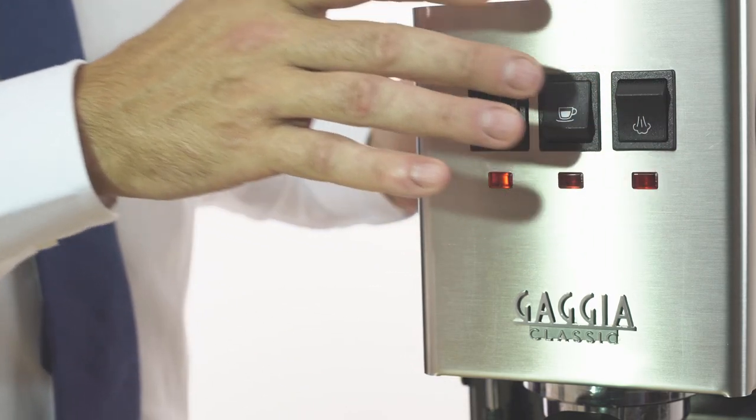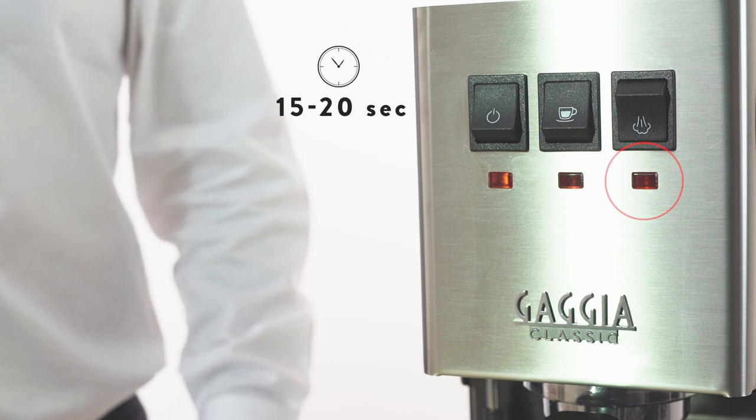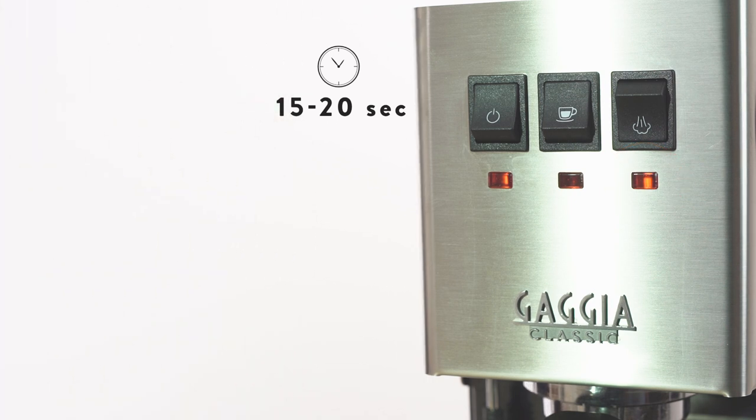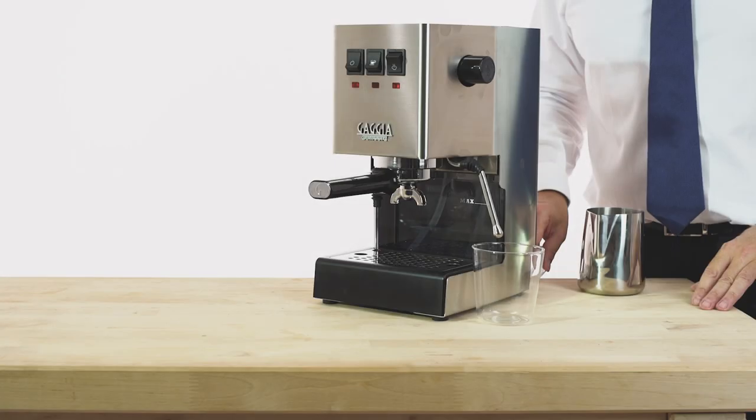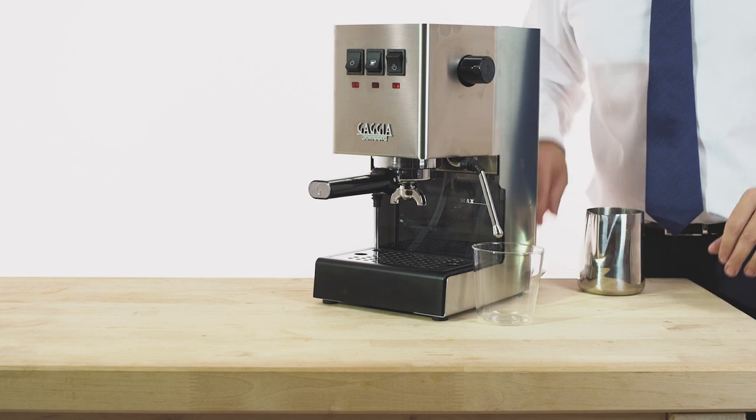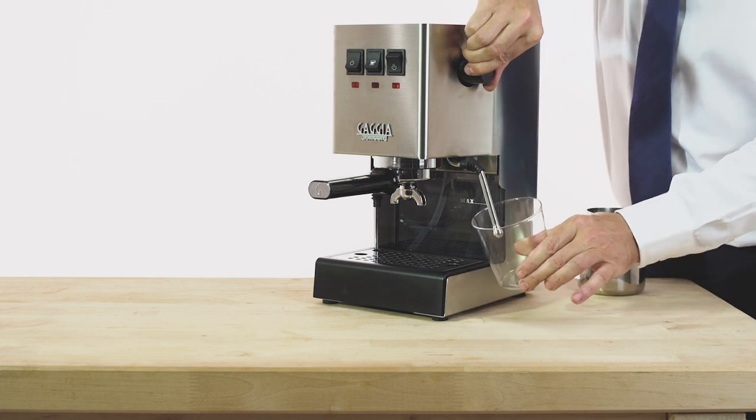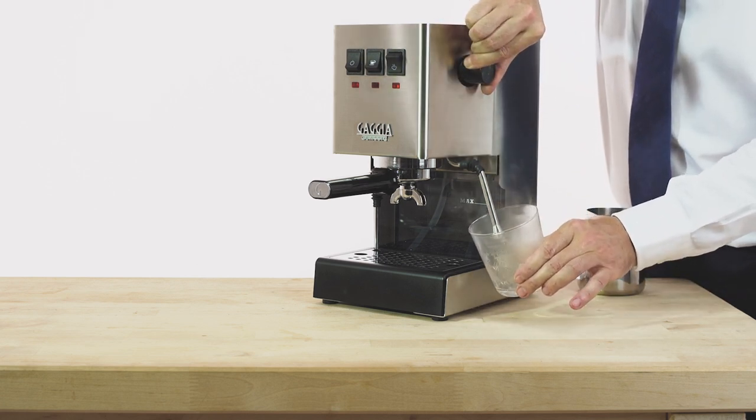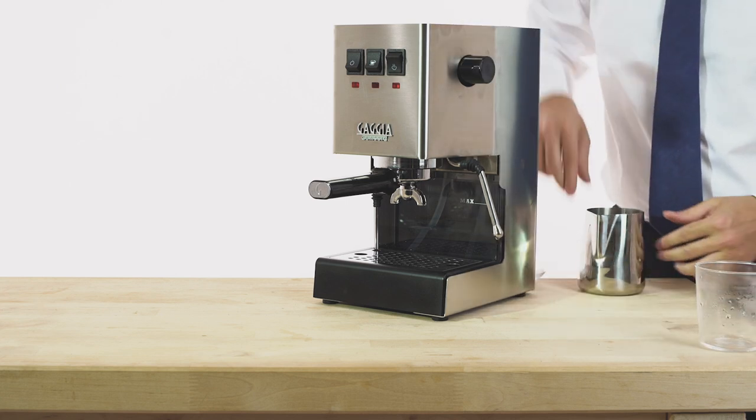Then press the steam button. When the steam temperature indicator light turns on, the classic is ready to deliver steam to froth milk. Turn the steam hot water knob slightly counter-clockwise to eliminate any condensation from the wand, then close the knob again.